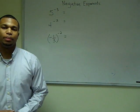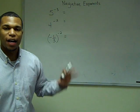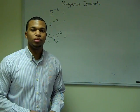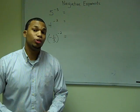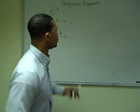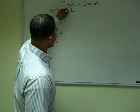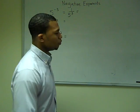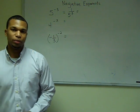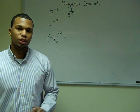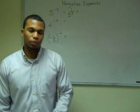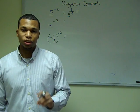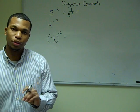Here are a few for you to try. First we have five to the negative third power. We're going to find five to the third power first. Five to the third power is 125. Since we have a negative exponent, we find the reciprocal of 125. So our answer is one over 125.